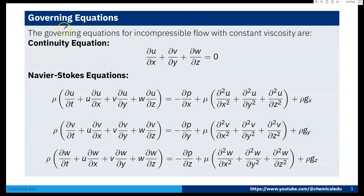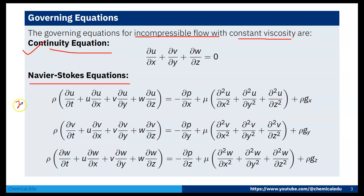First we write the governing equations. The continuity equation is: ∂u/∂x + ∂v/∂y + ∂w/∂z = 0, considering incompressible flow with constant viscosity. The x-momentum Navier-Stokes equation is: ρ(∂u/∂t + u∂u/∂x + v∂u/∂y + w∂u/∂z) = −∂p/∂x + μ(∂²u/∂x² + ∂²u/∂y² + ∂²u/∂z²) + ρgx, and similarly for y and z directions.